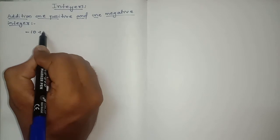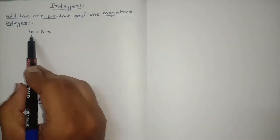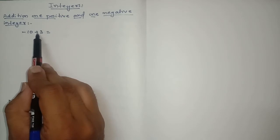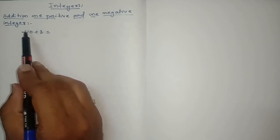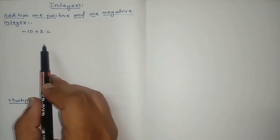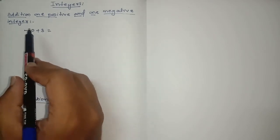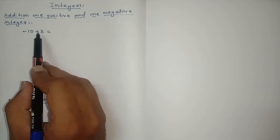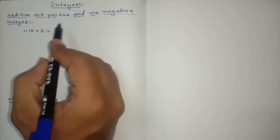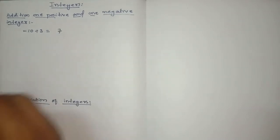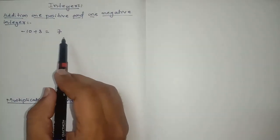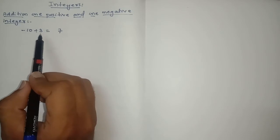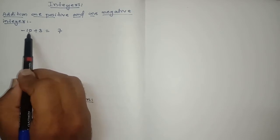Suppose minus 10 plus 3. One integer is negative and another is positive. Keep in mind: if signs are different, we subtract the numbers; if signs are the same, we add the numbers. If both are positive we add; if both are negative we add. But if signs are different, we subtract. So when you subtract 10 and 3 you get 7. What will be the sign? We take the sign of the bigger number.